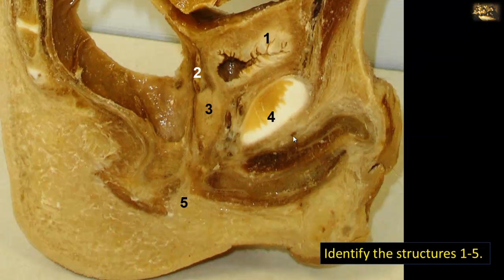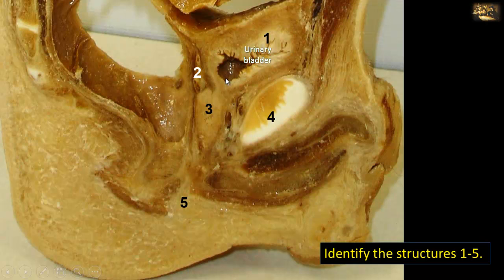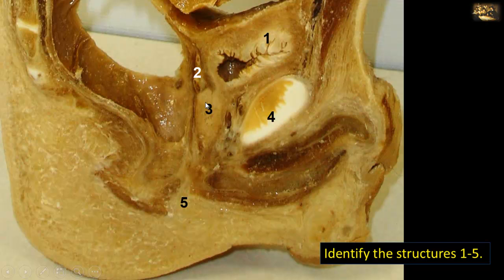This is the sagittal section of a male pelvis. Anteriorly you can see number 4, the pubic symphysis covered by cartilage, and behind it is the urinary bladder. Note the folding of the mucosa of the contracted bladder. Here is the apex, base, and neck of the bladder, and behind the bladder is the seminal vesicle. Below the neck of the bladder is the prostatic gland — the section is slightly off midline so it does not show the prostatic urethra. Below we can see the root of the penis in the urogenital triangle: the crus and the bulb. Behind the penis is the perineal body, a fibromuscular structure located just in front of the anal canal.